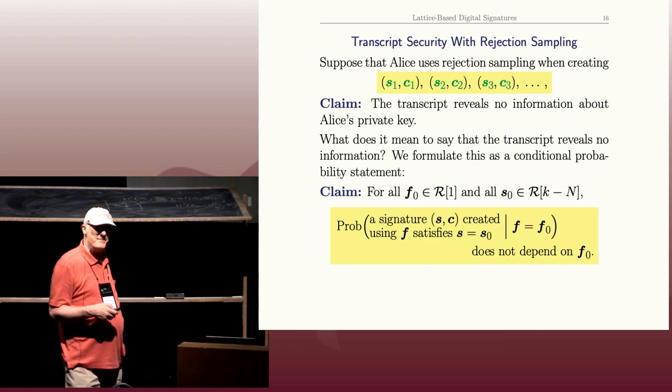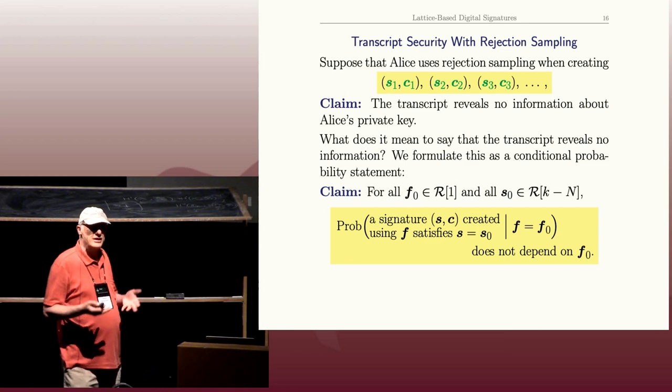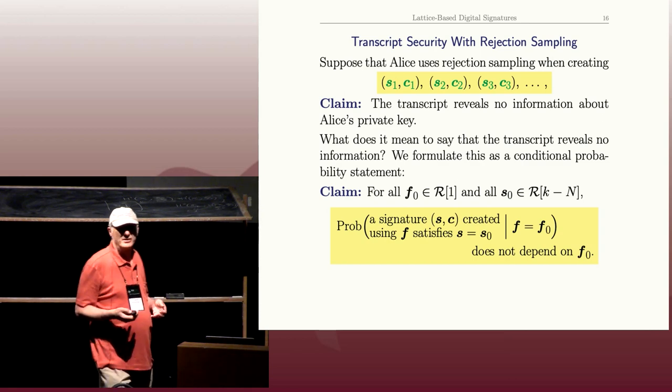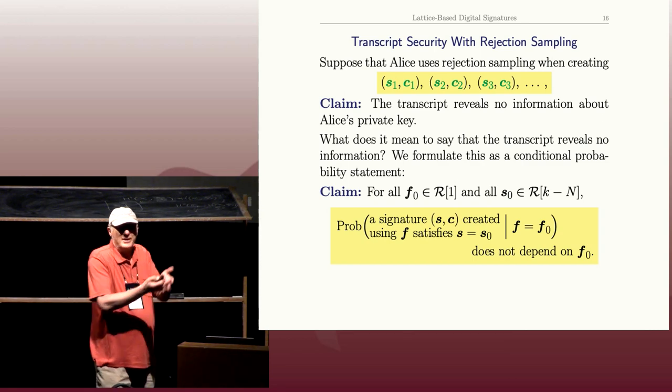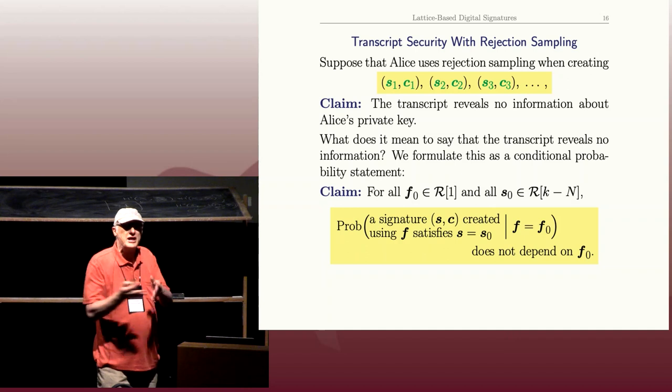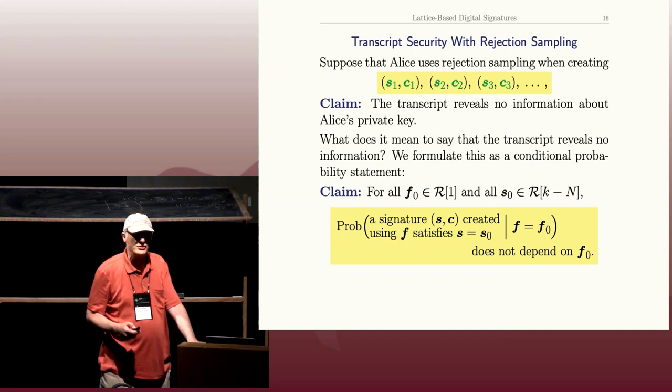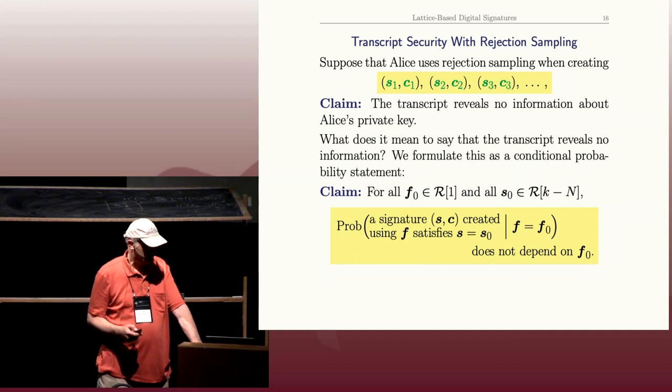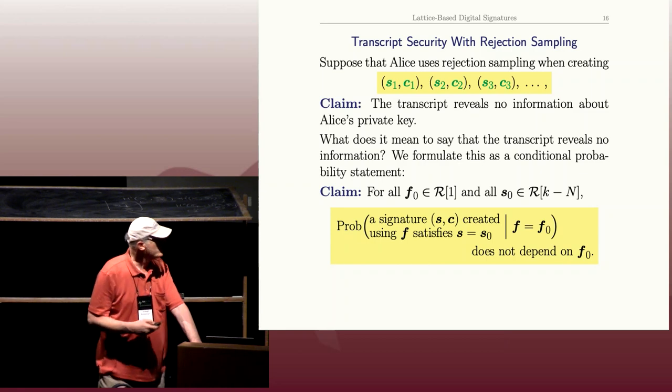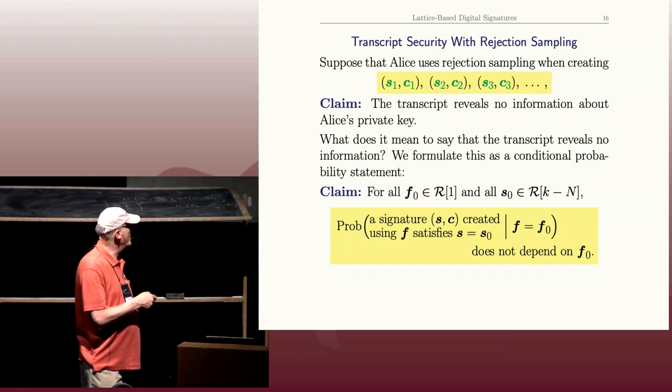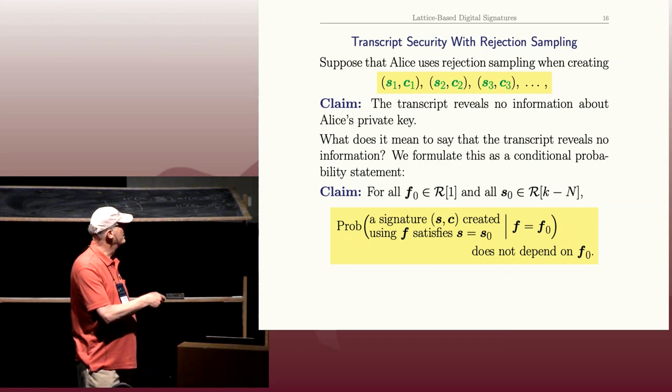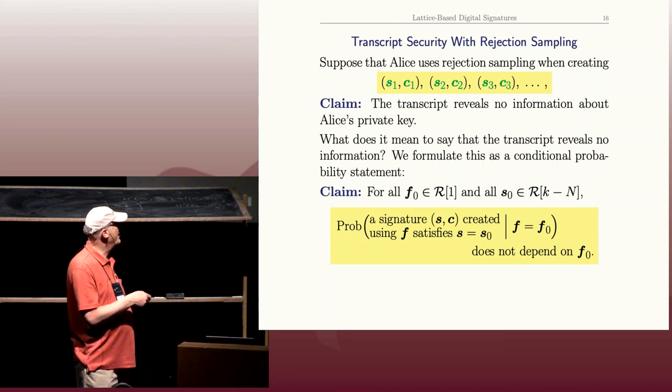And can you see that means that the signatures convey no information about the private key? Because the probability of getting any particular signature doesn't depend on the private key that was used. Okay, so our goal is to prove that this probability—we'll compute it exactly—really is independent of the F_0.